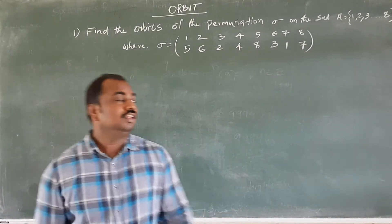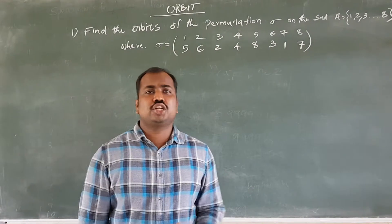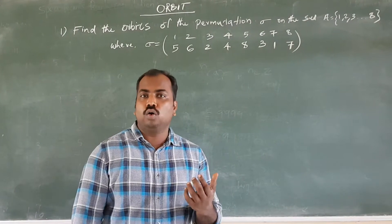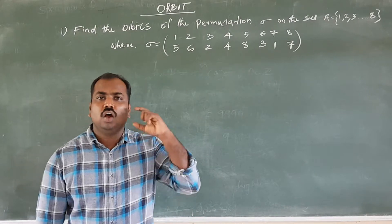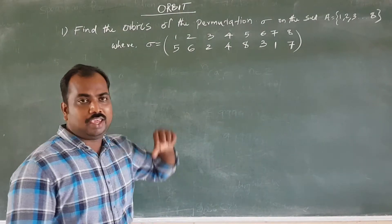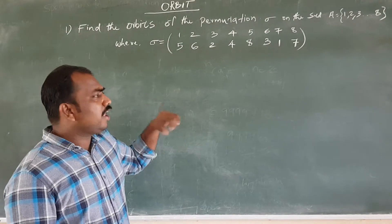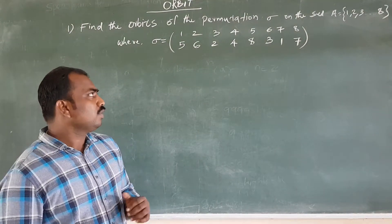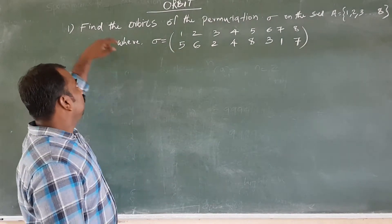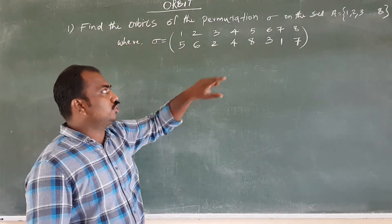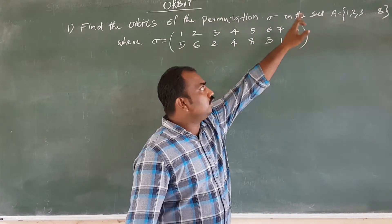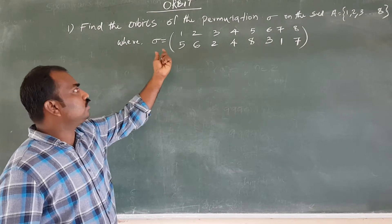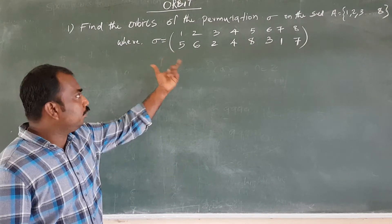Hi everyone. Permutation. Given a collection of orbits, find the orbits of the permutation sigma on the set A equal to {1, 2, 3, ..., 8}, where sigma is equal to the permutation.